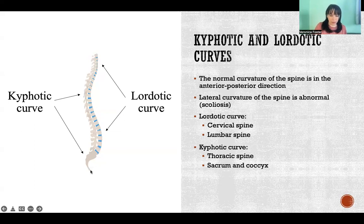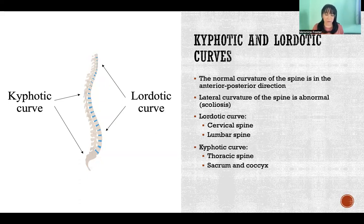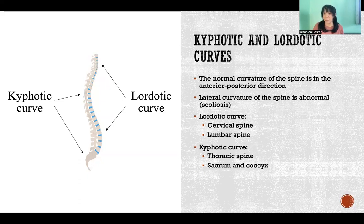So we have a kyphotic curve at the base, then a lordotic curve, kyphotic curve, and then a lordotic curve. When any of these curvatures become exaggerated, we would call it lordosis or kyphosis, meaning it's an exaggerated lordotic or kyphotic curve. It tends to be — though not always the case — that as one of these curvatures becomes exaggerated, the others become exaggerated to compensate. That is a common occurrence in postural abnormalities.